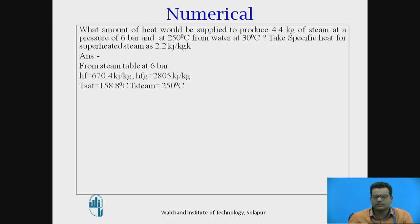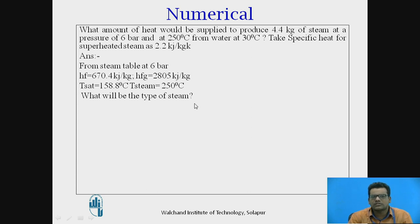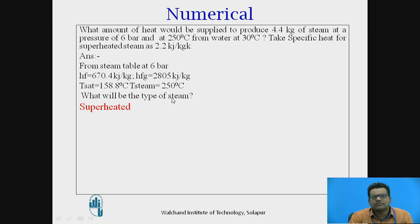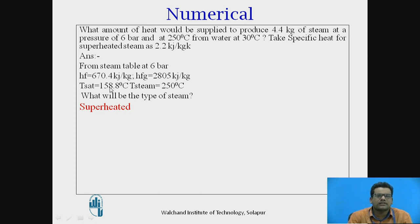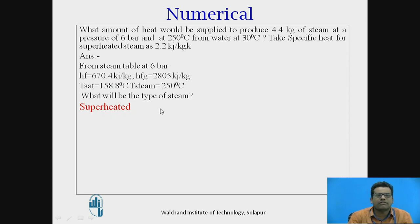Now, what will be the type of steam — wet, dry, or superheated? The answer is superheated, because the output temperature of the steam is 250°C, while the saturation temperature at 6 bar is 158.8°C. Since the temperature of the steam is greater than the saturation temperature, the steam is definitely superheated, meaning X equals 1.